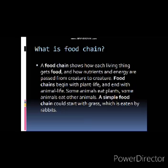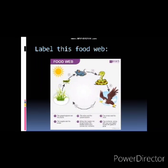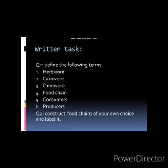Now I want to take a little assessment. I will give you a picture of a food chain and all of you try to label it according to their places. I also have a written task for more practice: define the following terms in your notebooks — herbivore, carnivore, omnivore, food chain, consumers, producers. Then construct a food chain of your own choice and label it.